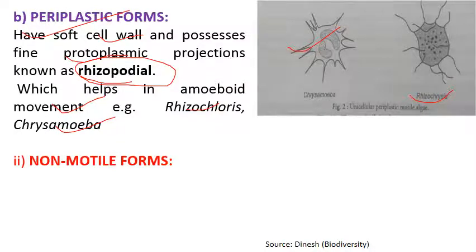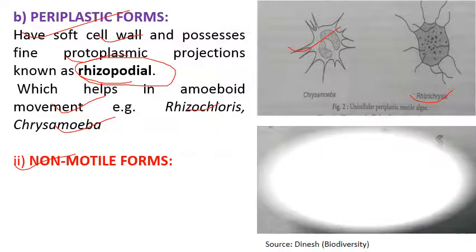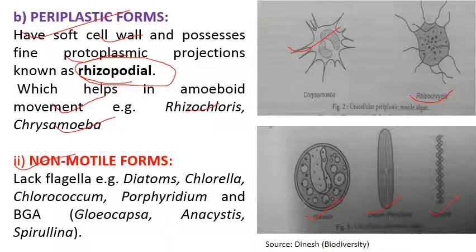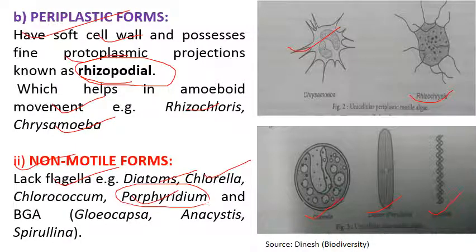Non-motile forms have no flagella and no structure for movement. Examples include Chlorella, diatoms, and Spirulina — they lack flagella. For example, Porphyridium is a member of red algae, and Spirulina is a blue-green algae.